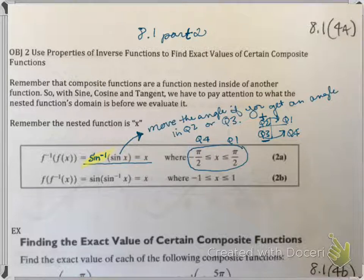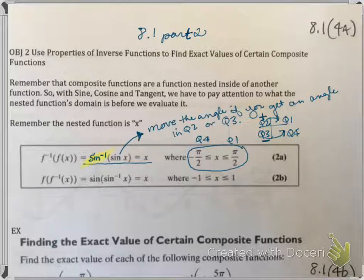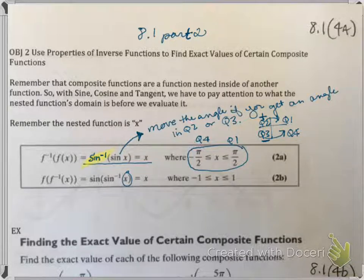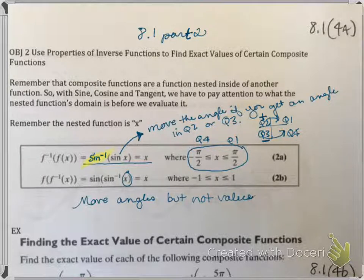Once again, if your embedded function is a quadrant two or quadrant three angle, because it is outside the range of inverse sine, you have to move it. Positive angles move into the positive quadrant — in quadrant two, sine is positive, so it moves to quadrant one. If you're in quadrant three where it's negative, you move to quadrant four. Now if the embedded function is inverse sine of x, as long as that value is between negative one and one, you're okay. If it's inverse sine of two, you can't do the problem because it's not in the domain. The moral of the story: you can move angles, but not values, and this only holds true for these composite trig functions.